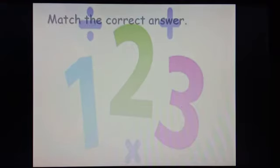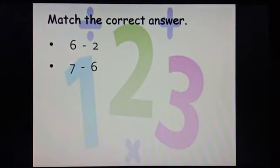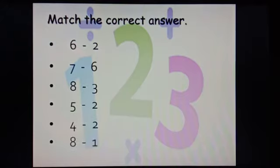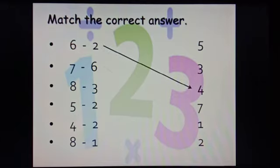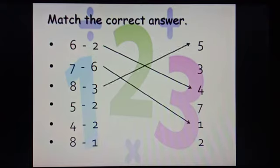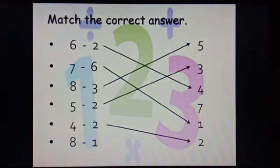Excellent. Now, match the correct answer. We have the questions: 6 minus 2, 7 minus 6, 8 minus 3, 5 minus 2, 4 minus 2, and 8 minus 1. The answers to match are 5, 3, 4, 7, 1 and 2. So: 6 minus 2 is 4, 7 minus 6 equals to 1, 8 minus 3 is 5, 5 minus 2 is 3, 4 minus 2 is 2, and 8 minus 1 is 7.